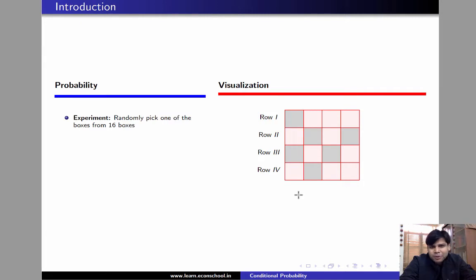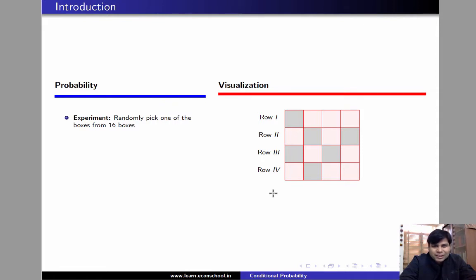Suppose the experiment consists of randomly picking one of the boxes from the 16 boxes you see on your right. So in this grid there are 16 boxes and each of the boxes is equally likely to be picked in this experiment.